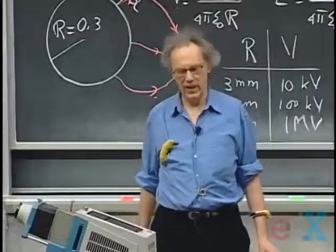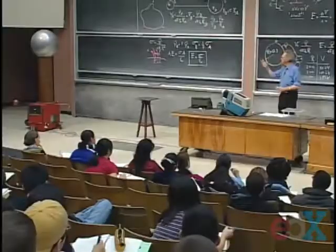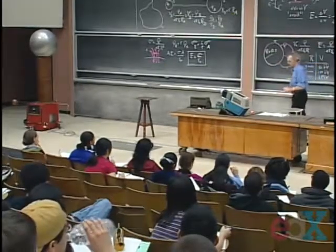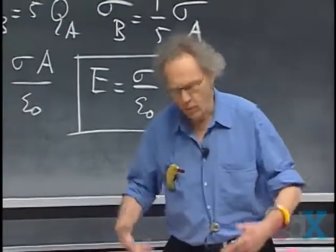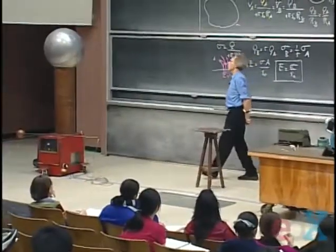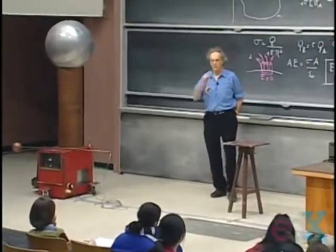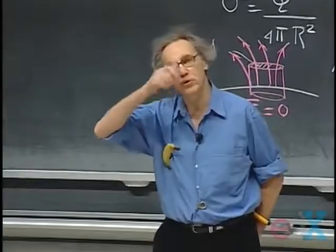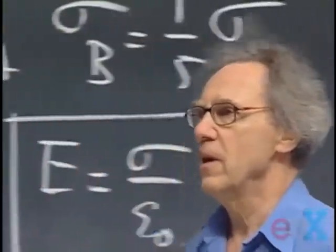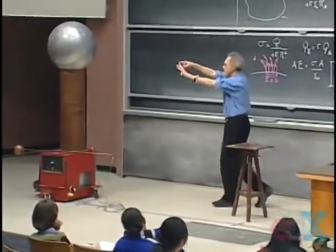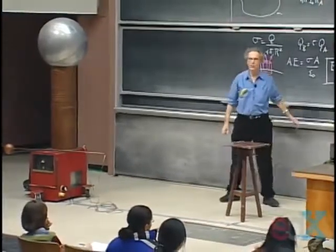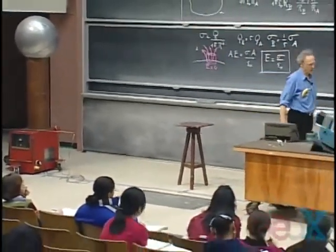If I approach the Van de Graaff not with a sphere but by walking toward it — I'm also a pretty good conductor connected to earth — the spark would likely develop first between my nose and the Van de Graaff, because my nose has the smallest radius of curvature. Or my head would be a good candidate. If I approach with my hand stretched, sparks will first develop between my fingertips, because they have a very small radius and are closest.